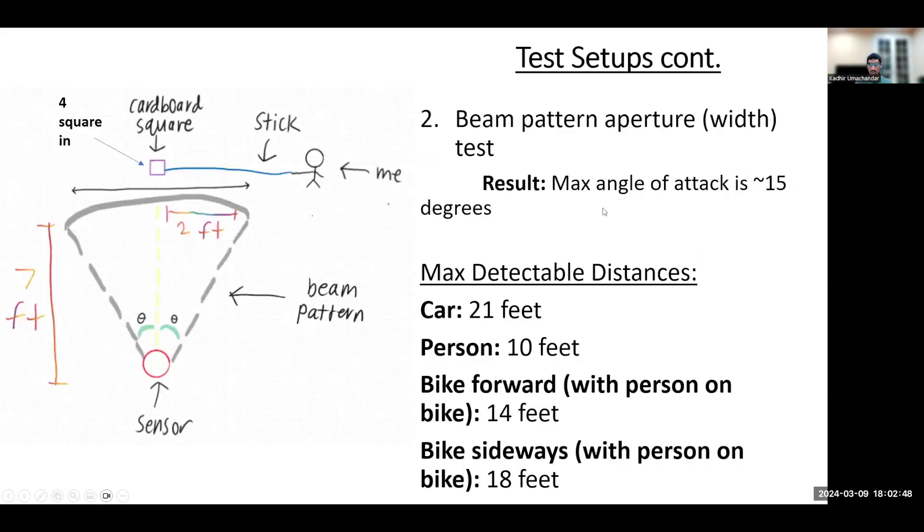Then I wanted to find the aperture or width of the beam pattern of the ultrasonic sensor, and I also did this at a vertical range of 7 feet. So I moved this 2 by 2 square that we used in the previous slide horizontally this time to find out how wide the beam pattern is, like the max horizontal distance. And through this I found that the max horizontal distance is 2 feet.